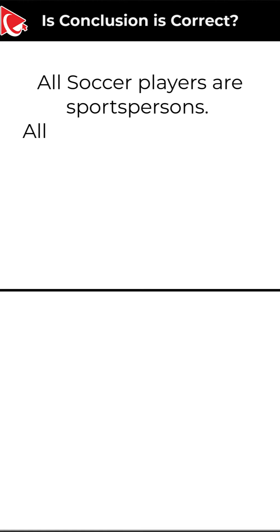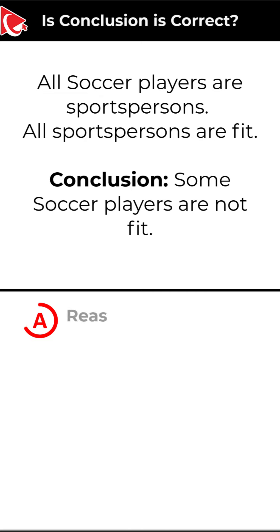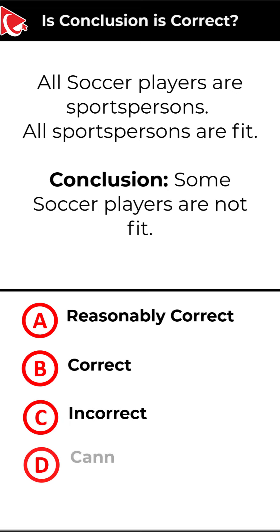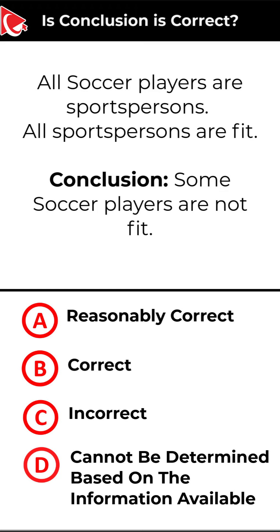You have four different choices to determine if the conclusion is accurate. Choice A: it's reasonably correct. Choice B: it is correct. Choice C: it's incorrect. And choice D: cannot be determined based on the information available.